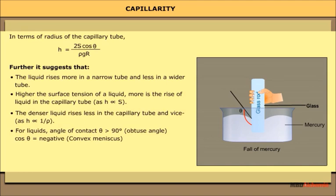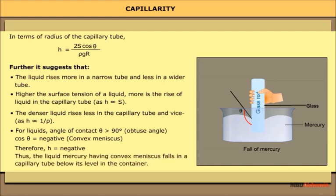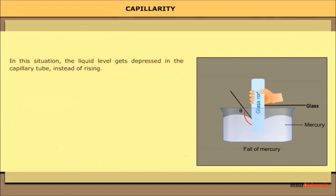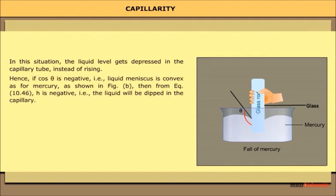For liquids where the angle of contact theta is greater than 90 degrees — that is, cos(theta) is negative — the meniscus is convex. Therefore h is negative, meaning the liquid falls in the capillary tube below its level in the container. Mercury is such a liquid; it has a convex meniscus and gets depressed in a capillary tube instead of rising. Thus, if cos(theta) is negative, h is negative and the liquid dips in the capillary tube.